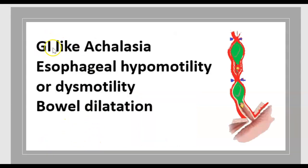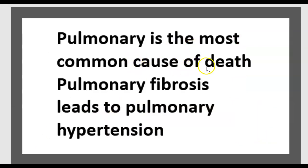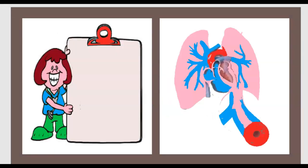The GI tract in scleroderma presents like achalasia of the esophagus — esophageal hypomotility or dysmotility with bowel involvement. Pulmonary involvement is the most common cause of death, because fibrosis leads to pulmonary hypertension. In CREST syndrome, think about pulmonary hypertension.